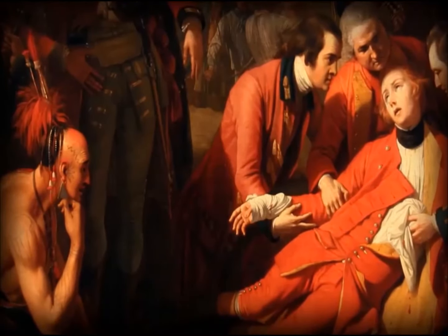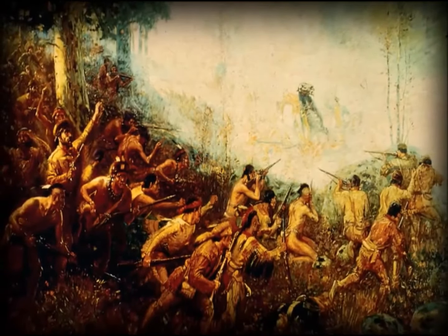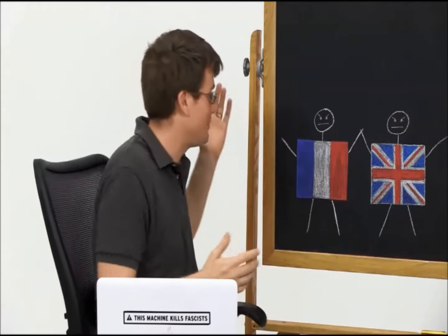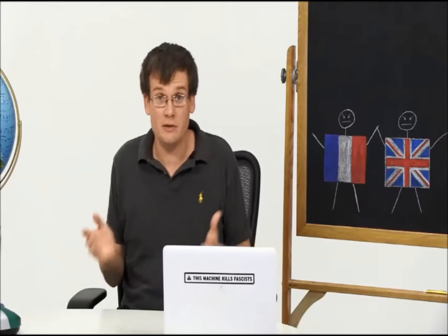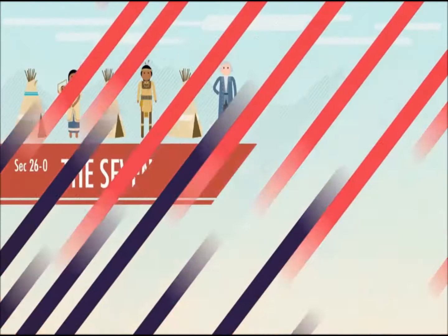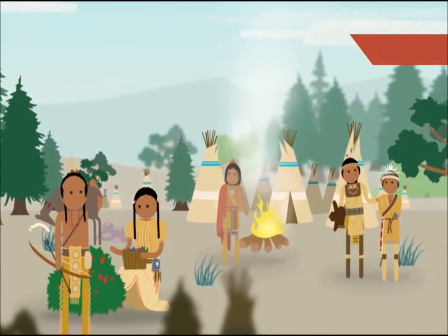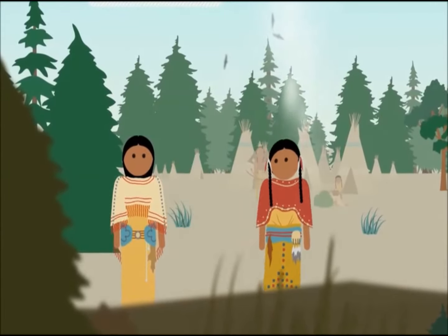Almost all the battles in North America featured significant participation by Native Americans. Different Native tribes sided with both the British and the French, but as a broad generalization, Native Americans were more likely to support the French. Shrewd Indian tribes had been able to play the British and the French off each other and maintain a degree of autonomy. Before the arrival of the Europeans, most Native Americans lived in tribal groups and subsisted on a combination of small-scale agriculture and hunting and gathering, depending on where they were situated.